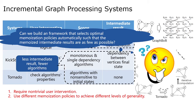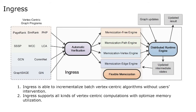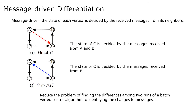For this, we propose an automated incremental graph processing system, Ingress. Ingress is not only able to incrementalize batch vertex-centric algorithms without user intervention, but also supports all kinds of vertex-centric computation with optimized memory utilization. In the vertex-centric graph processing framework, the state of each vertex is decided by received messages from its neighbors.